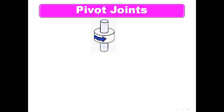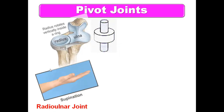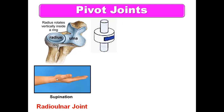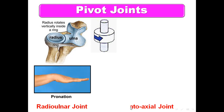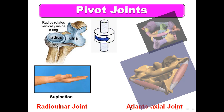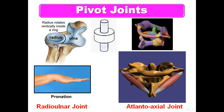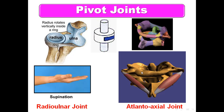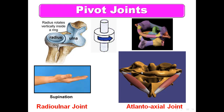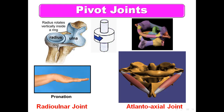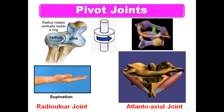Pivot joints: movement occurs around a longitudinal axis — rotation. The radio-ulnar joint allows pronation and supination — this is rotation of the radius. The atlanto-axial joint allows rotation of the atlas around the axis. So examples of pivot joints are the radio-ulnar joint between radius and ulna, and the atlanto-axial joint between atlas and axis.